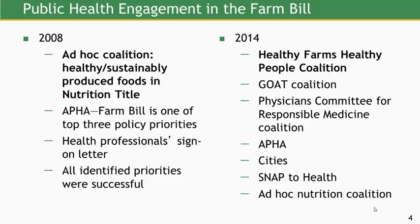Fast forward to 2014. In the lead-up to the 2014 Farm Bill, public health groups started organizing as far back as 2011, with meetings and discussions about how to raise the priority of these issues. A group came together called the Healthy Farms, Healthy People Coalition, with the goal of bringing together public health and agriculture—both conventional and sustainable—to identify shared interests and jointly push for priorities. That group has continued to be active; we at the Center for a Livable Future are on the steering committee.